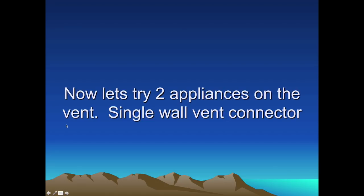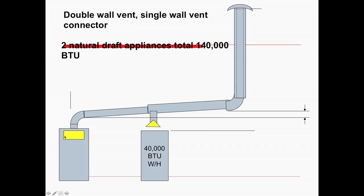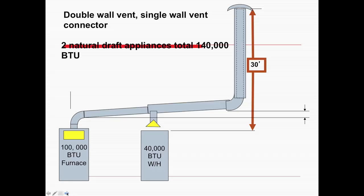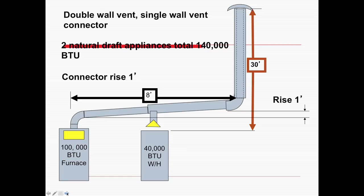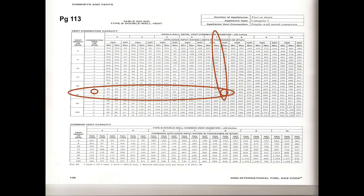Now we're going to try two appliances on the vent, using single wall vent connector again. Both of these appliances are natural draft appliances — two natural draft appliances totaling 140,000 BTUs: a 100,000 BTU furnace and a 40,000 BTU water heater. We have an eight-foot lateral, 30-foot height. The connector rise is one foot. We need to have at least one-quarter inch per foot on the rise. At 30-foot height with one-foot rise.